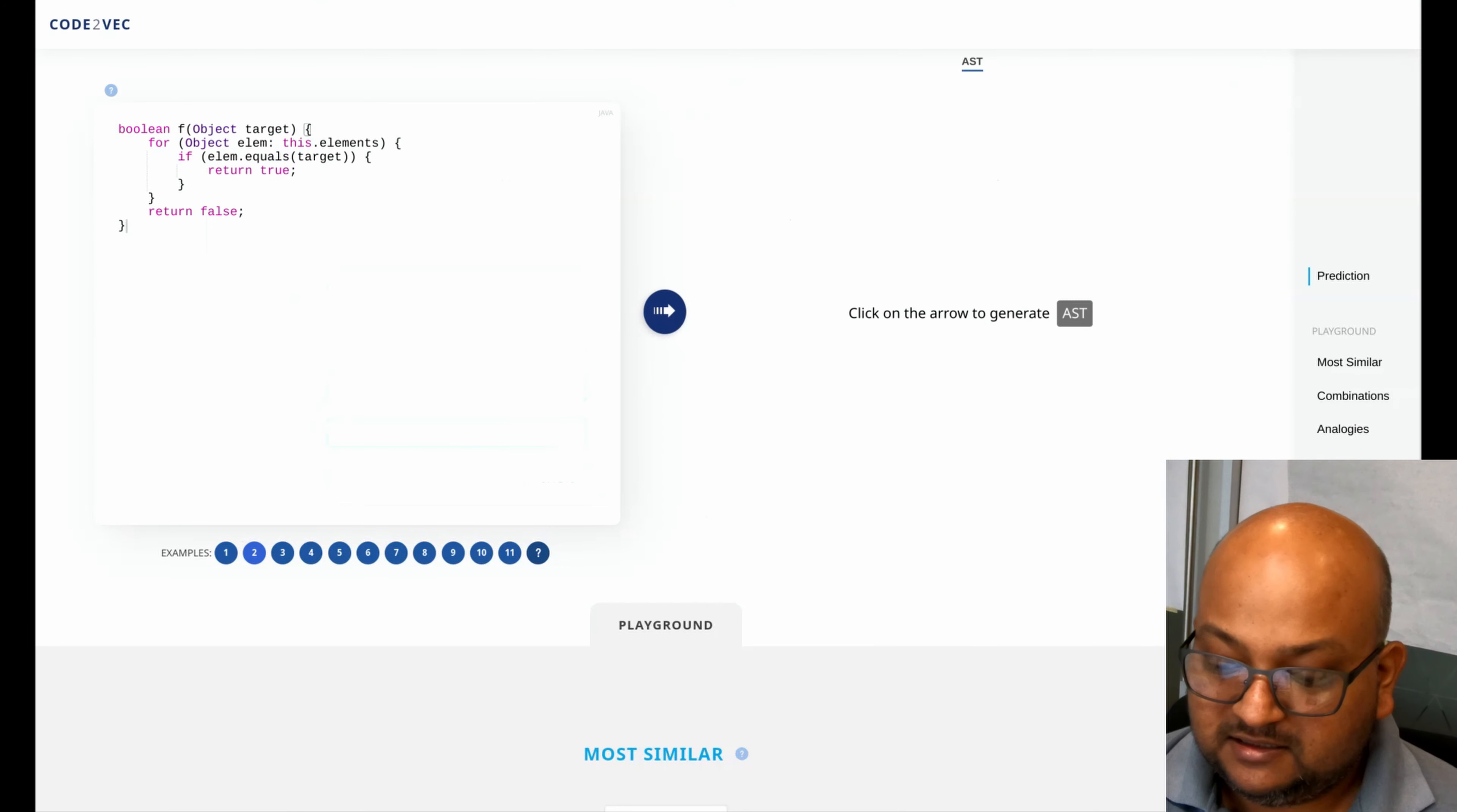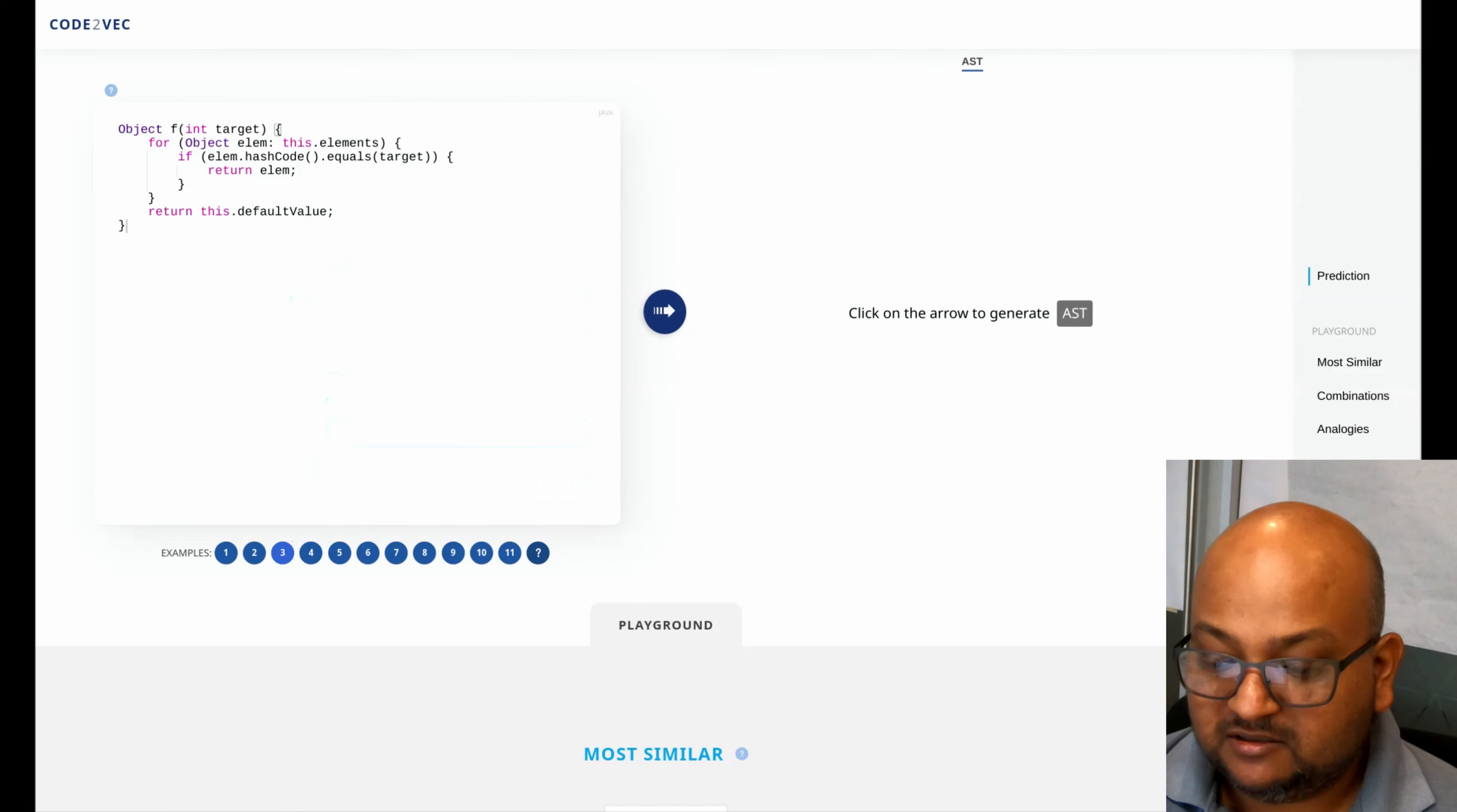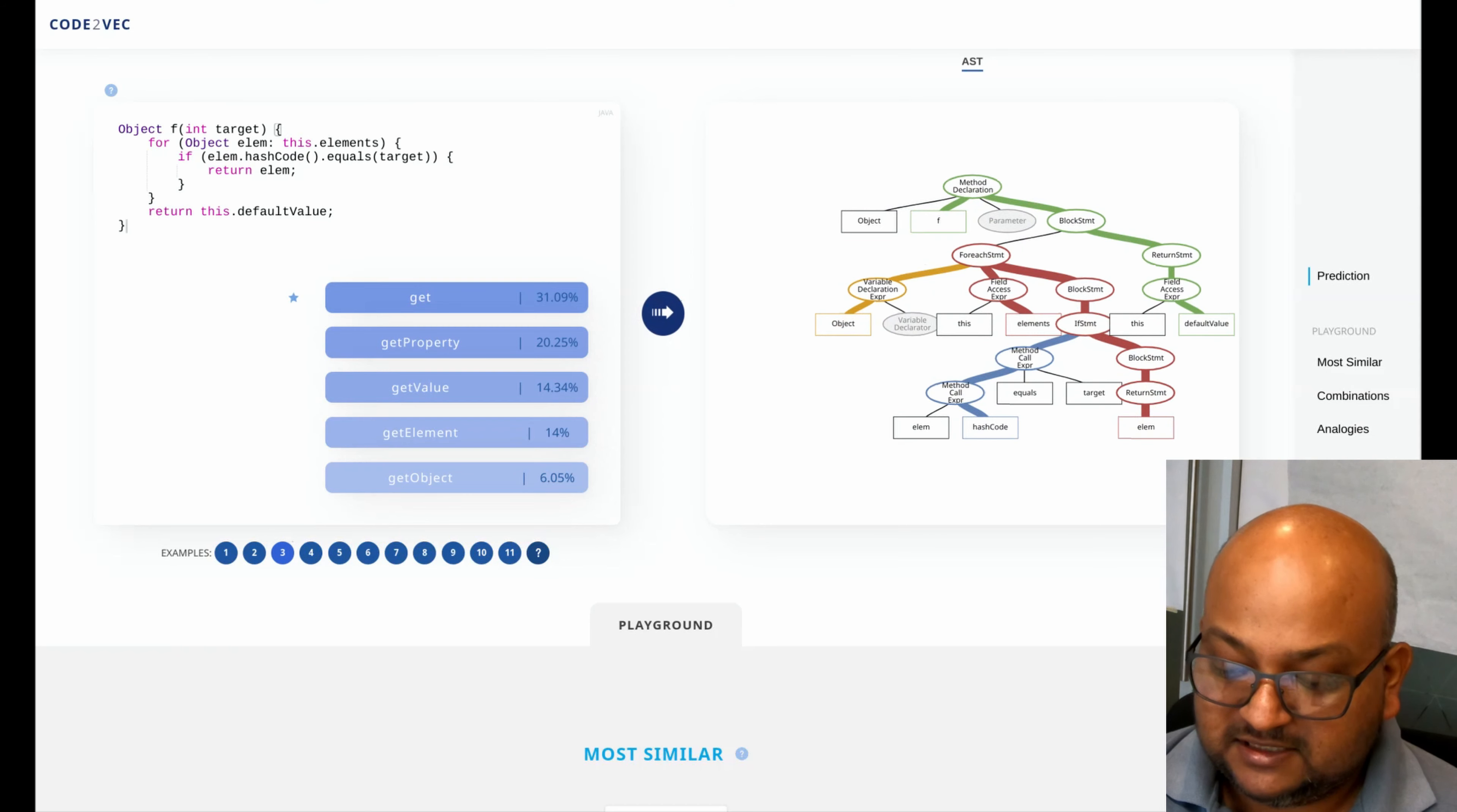If you look at this one, this snippet of code looks for an object in a list of elements and returns true if it's found and it suggests the name contains which sounds very very right. This one looks for an element and then returns the element. So this should be something like get or find and it returns get.